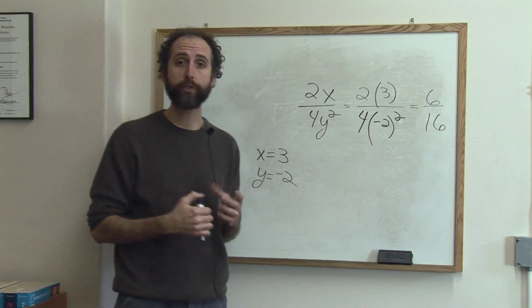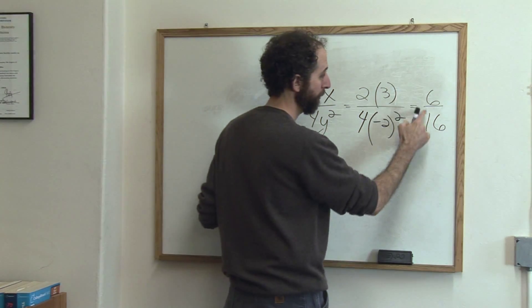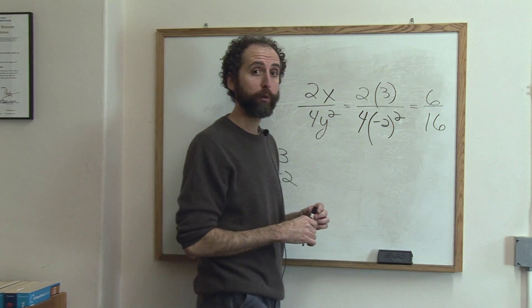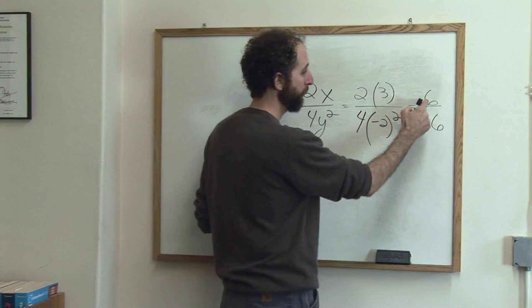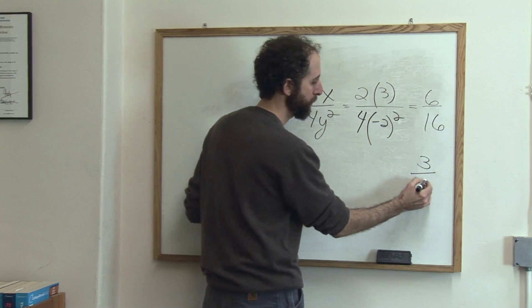As always, when you have a fraction, you always want to reduce if you can. So 6 over 16. 2 goes in the top and the bottom. 6 divided by 2 is 3. 16 divided by 2 is 8.